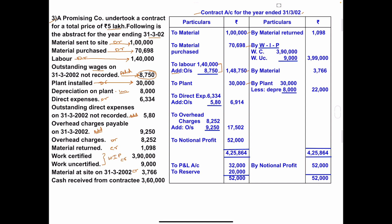Direct expenses — write on the debit side. Write the amount in the inner column: ₹6,334. Add outstanding direct expenses on 31st March (not recorded): ₹580. Total of these two, written in the outer column: ₹6,914.